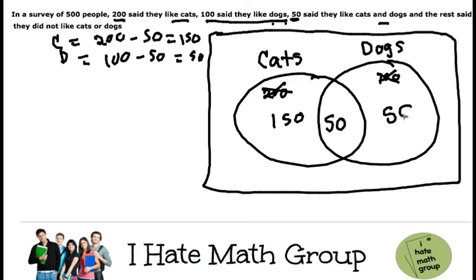Now, we haven't finished because remember, we did a survey and in total there were 500 people. Now, we need to figure out how many people do not like cats or dogs. That's going to be right here, which I'm going to put my number. This is the whole universe. Everything in this rectangle here is the universe.